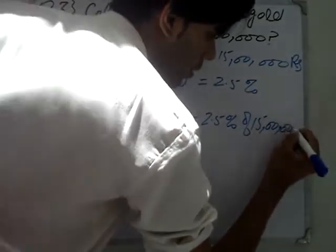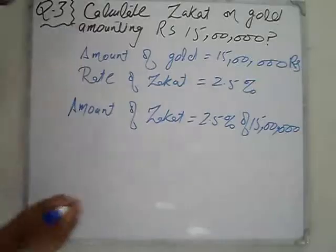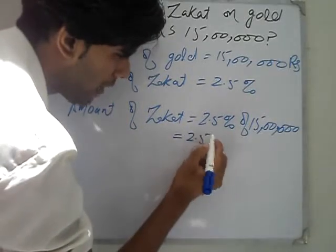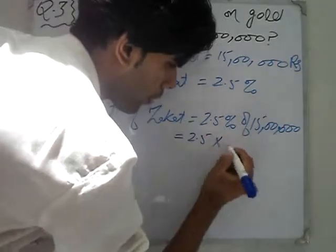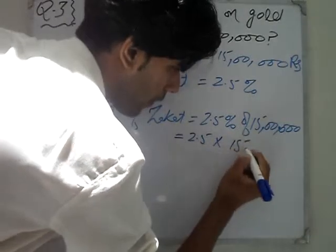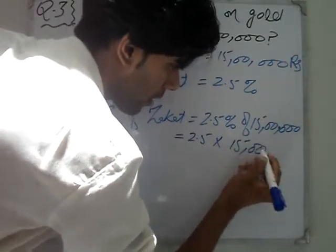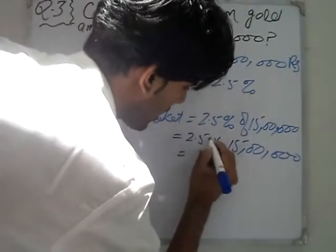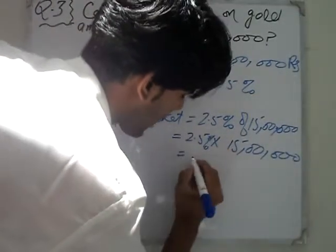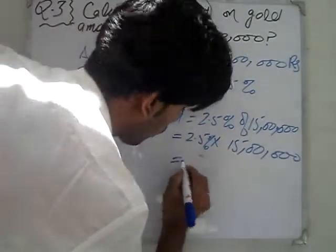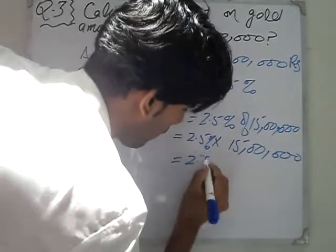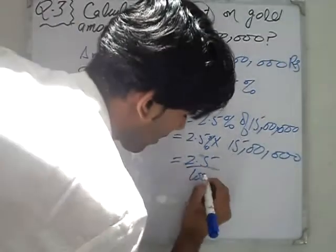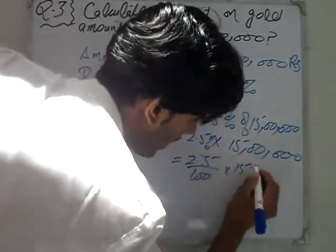2.5% of 15 lakh. So we calculate: 2.5 over 100, into 15 lakh.